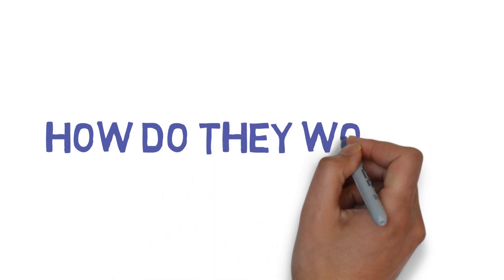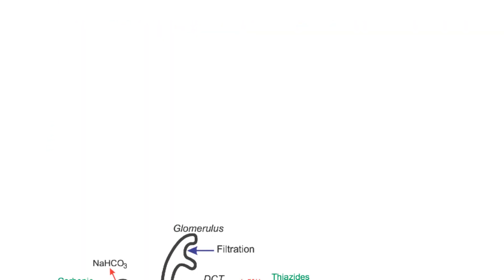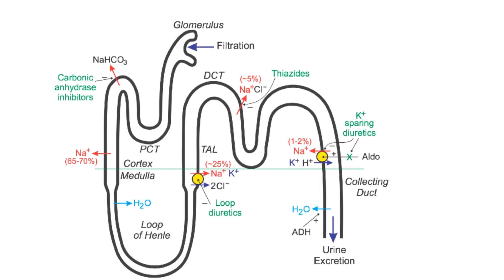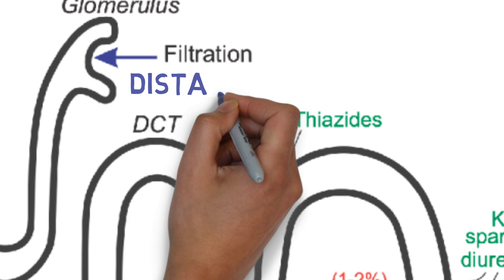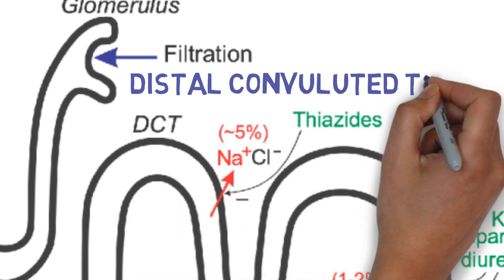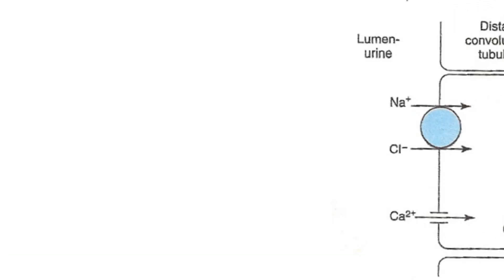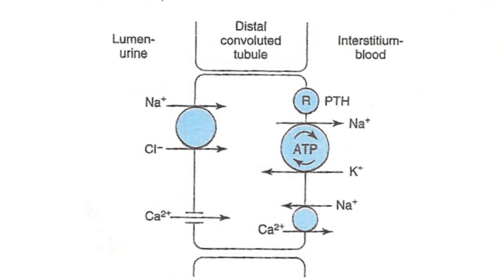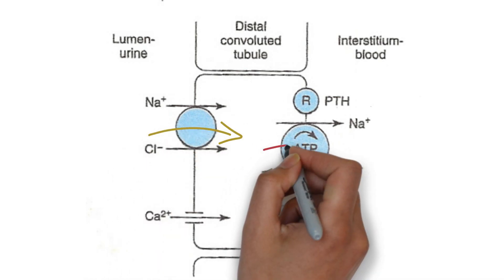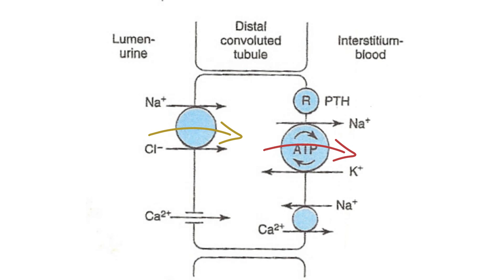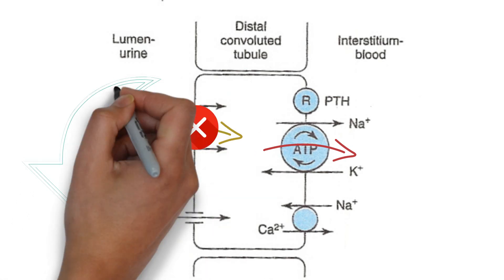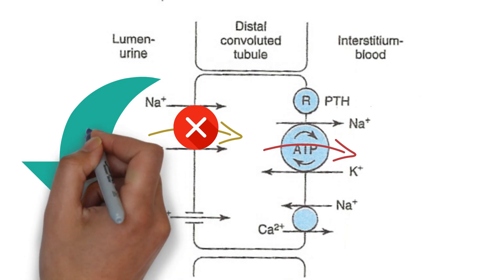So how do they work? Thiazides reduce water reabsorption in the nephron by inhibiting the sodium chloride symporter in the distal convoluted tubule. Normally sodium and chloride enter the distal convoluted tubule cell through the symporter, then they get reabsorbed back into the bloodstream through sodium potassium ATPase channel and chloride channels. Thiazides block the symporter, causing the sodium and subsequently water to get filtered into the urine, causing a diuretic effect.